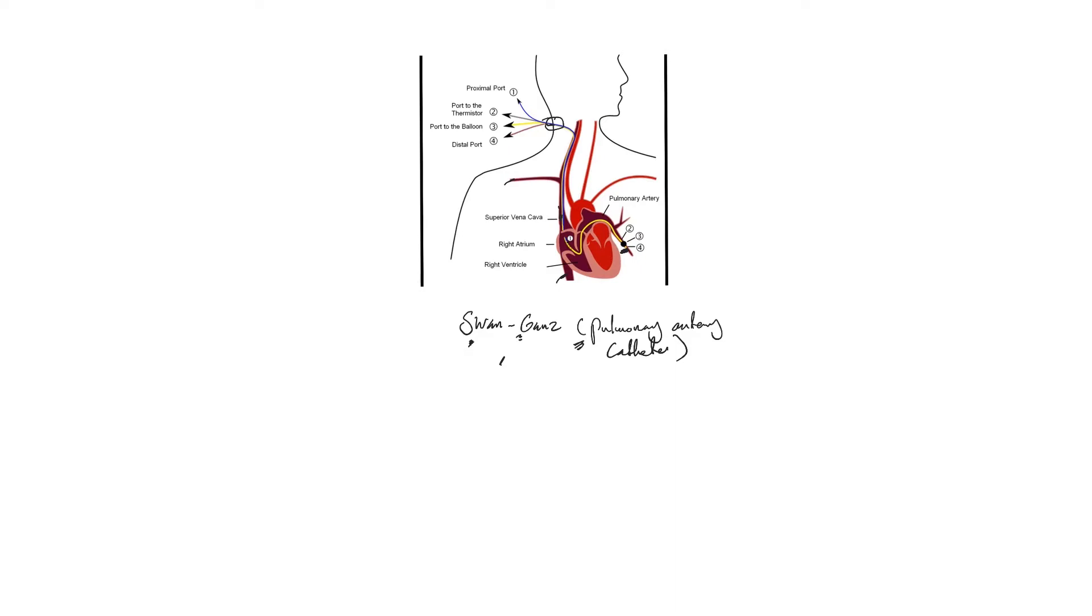It enters the right atrium through the tricuspid valve here, then to the right ventricle, through the pulmonary valve here into the major pulmonary artery, and then into one of the branches where it sits with the balloon inflated.